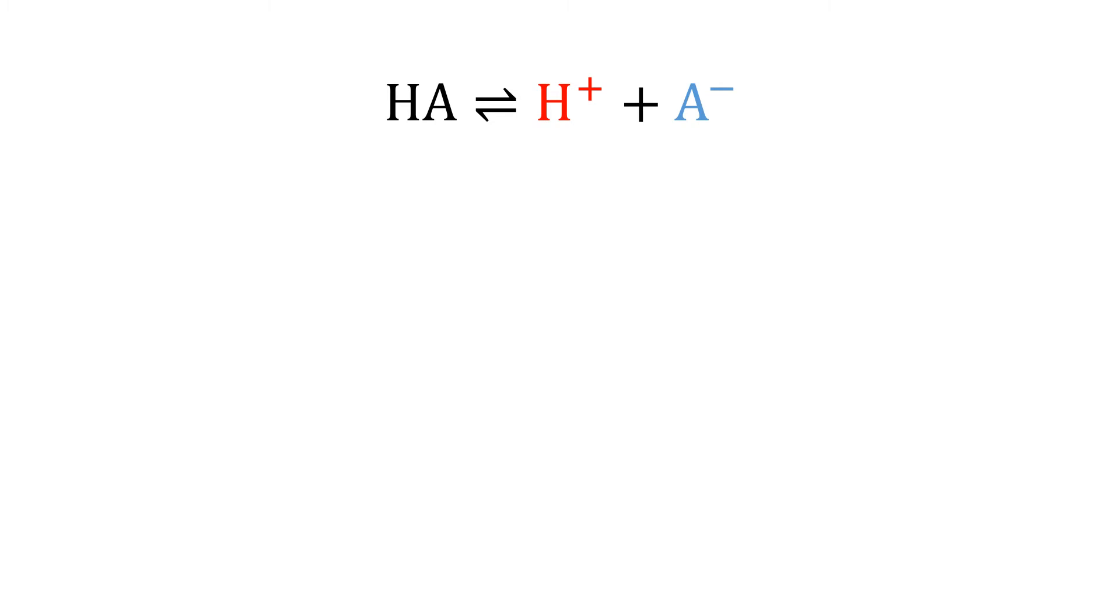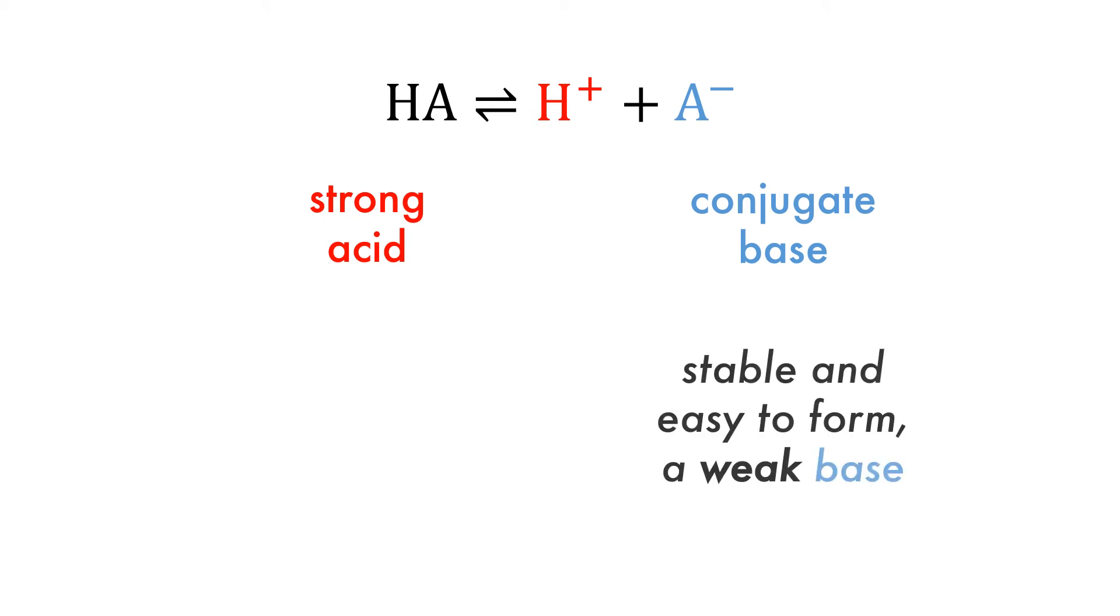But how do we determine the strength of an acid? We know that an acid is something that will easily lose a proton, but to be a strong acid, it needs to have a weak conjugate base that is easy to form. Conversely, a weak acid has a strong conjugate base that easily gains a proton and is therefore unstable.